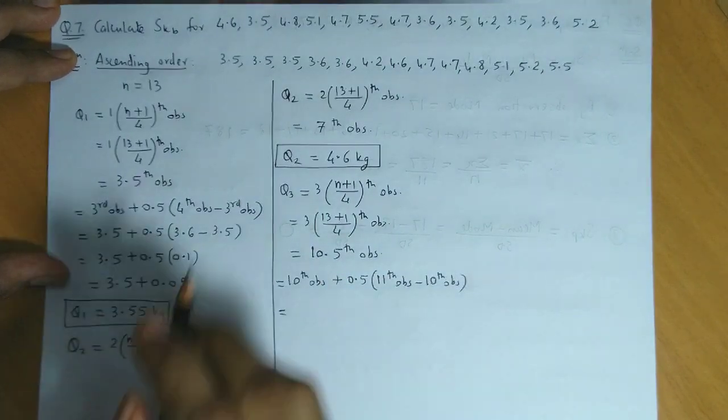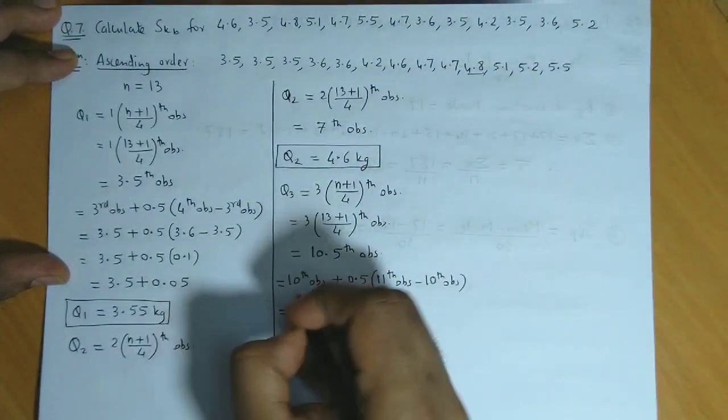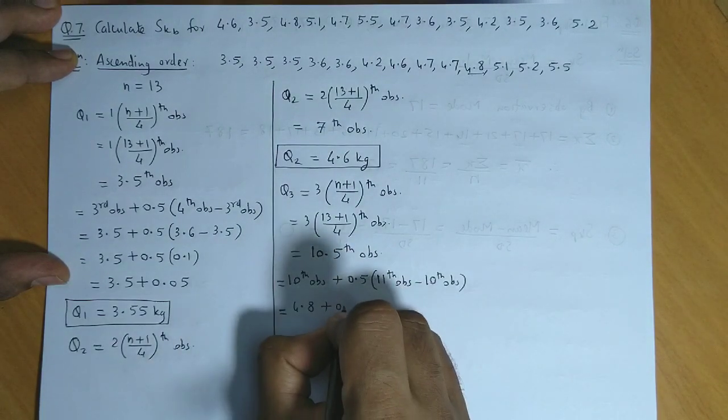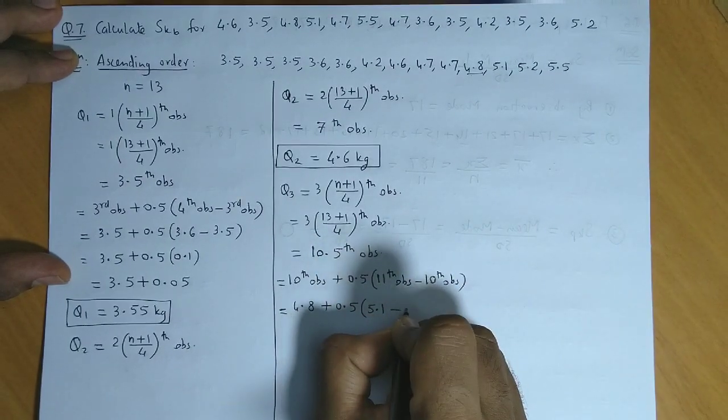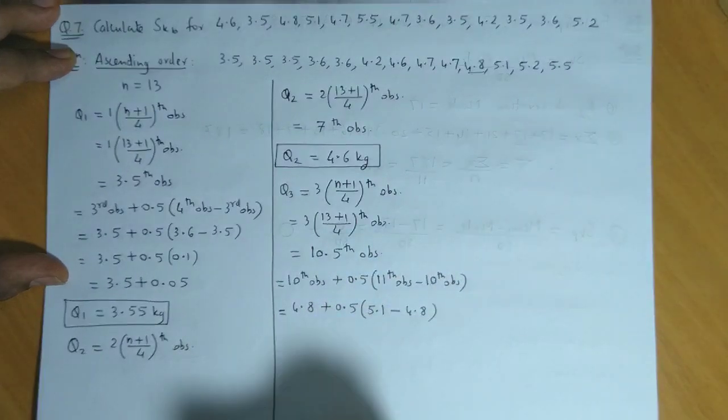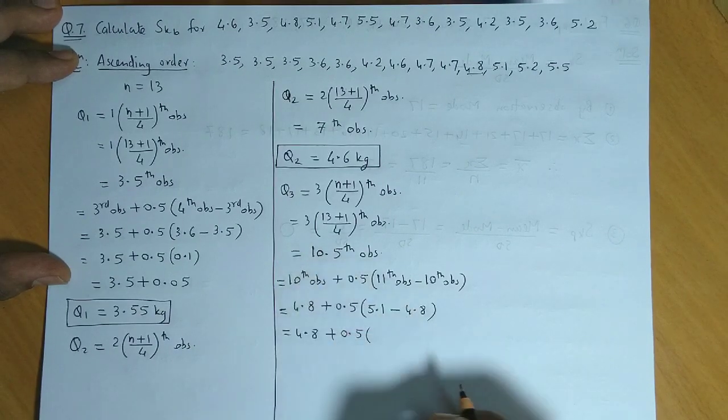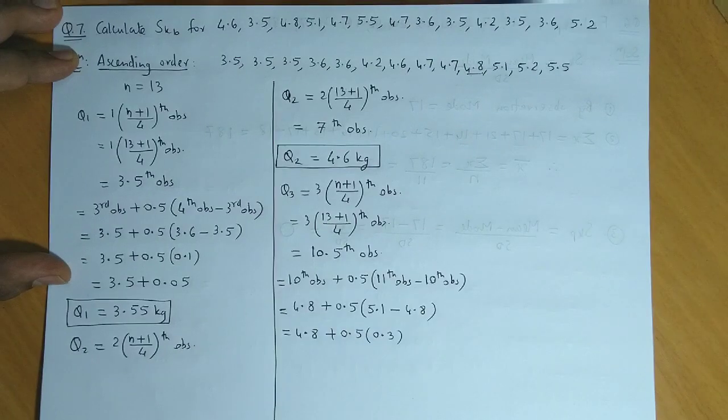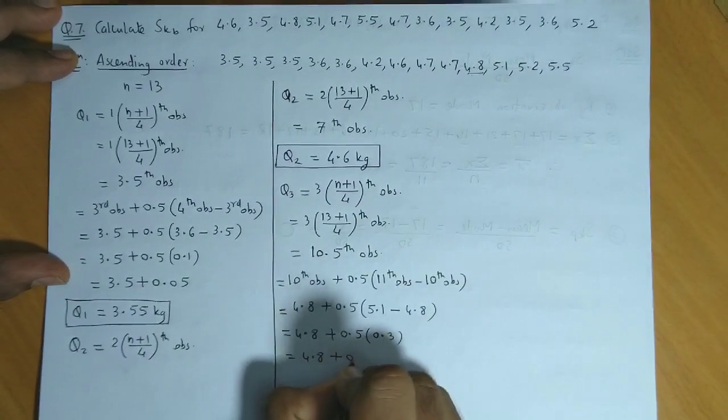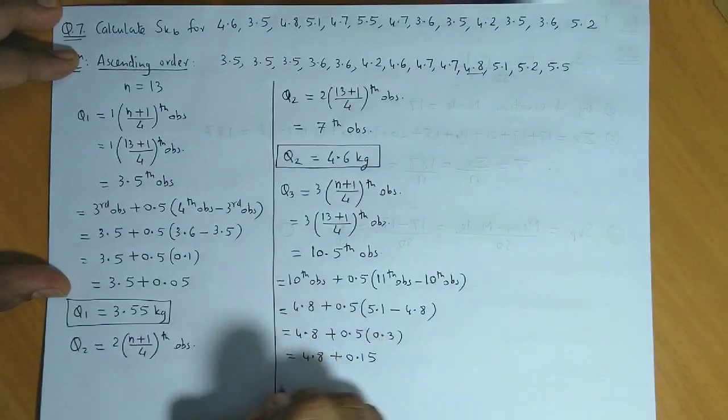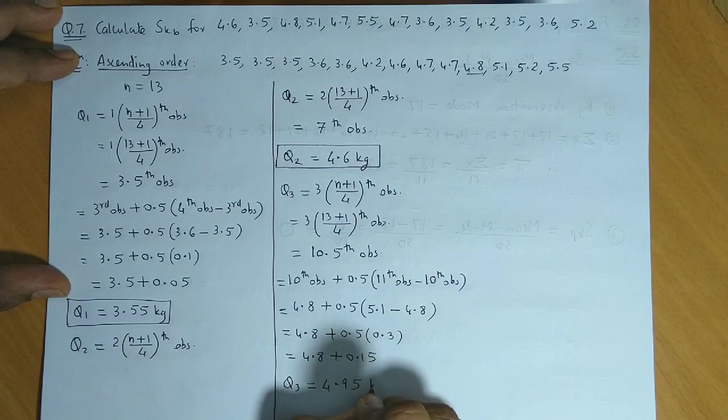So the 10th observation is 1, 2, 3, 4, 5, 6, 7, 8, 9, 10. So 10th observation is 4.8 plus 0.5 into 11th observation which is 5.1, and 10th observation is 4.8. So we get 4.8 plus 0.5, the difference is 0.3. So we have 4.8, 5 times 3 is 15, so this becomes 0.15. So the total value, that is Q3 value, will be 4.95 kg.